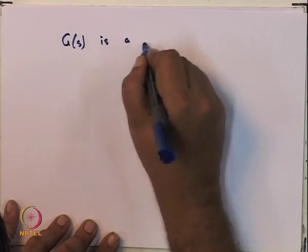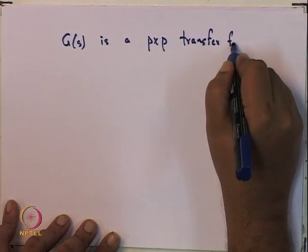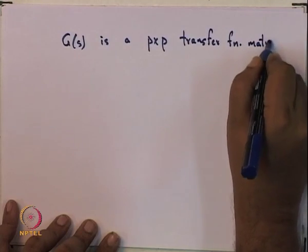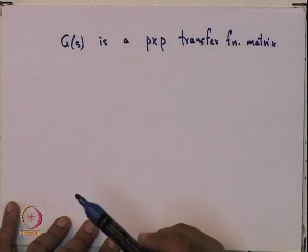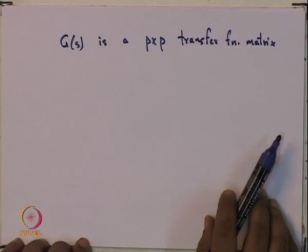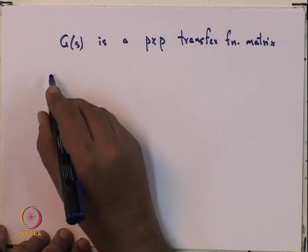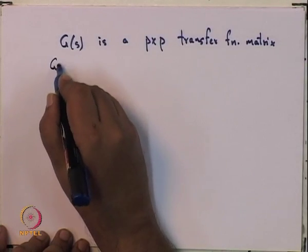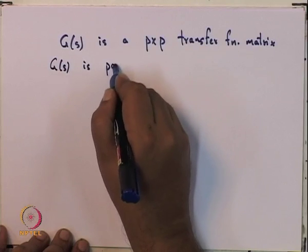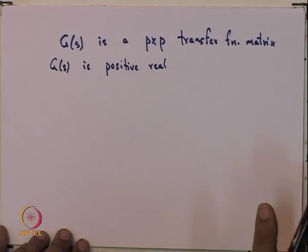Let us assume G is a P×P transfer function matrix. The transfer function matrix has to be square because the number of inputs must equal the number of outputs. The following conditions have to be satisfied for G to be declared a positive real transfer function. This particular definition is the one given in the book Nonlinear Systems by Khalil. Just as in the 1D case, in the multiple input multiple output case there could be other opinions, but I am sticking to this for now.